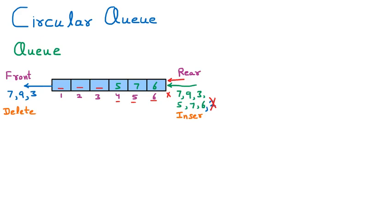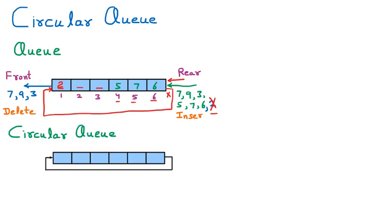That is the problem, and the solution is the circular queue. Circular queue means we connect the last block with the first block. There is a pointer which points from the last block to the first block. Whenever there is such a case, it is called a circular queue. The next element 2 can now be inserted into the first block, because after the rear it comes back to block one. That is the advantage of circular queues, and that is why circular queues were invented.